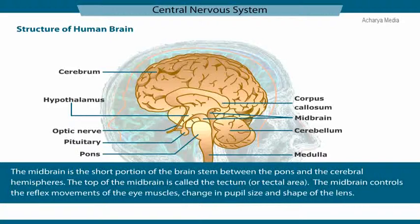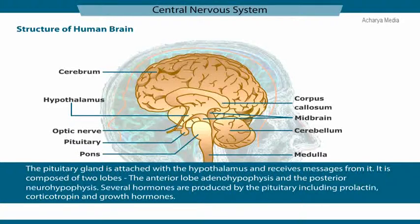The midbrain controls the reflex movements of the eye muscles, change in pupil size, and shape of the lens. The pituitary gland is attached to the hypothalamus and receives messages from it. It is composed of two lobes: the anterior lobe, adenohypophysis, and the posterior lobe, neurohypophysis. Several hormones are produced by the pituitary gland, including prolactin, corticotrophin, and growth hormones.